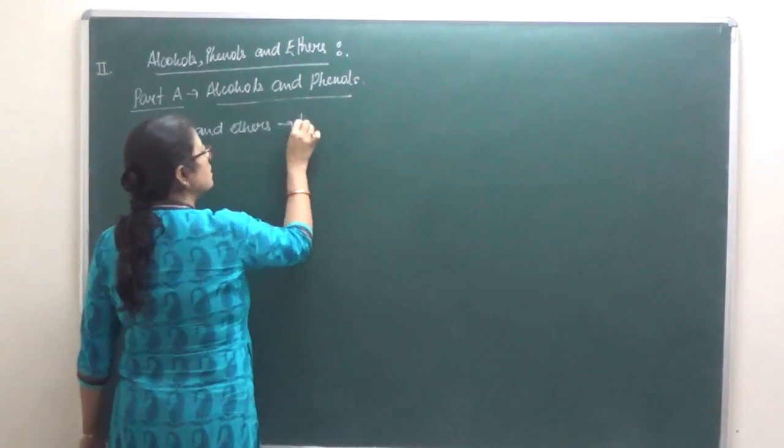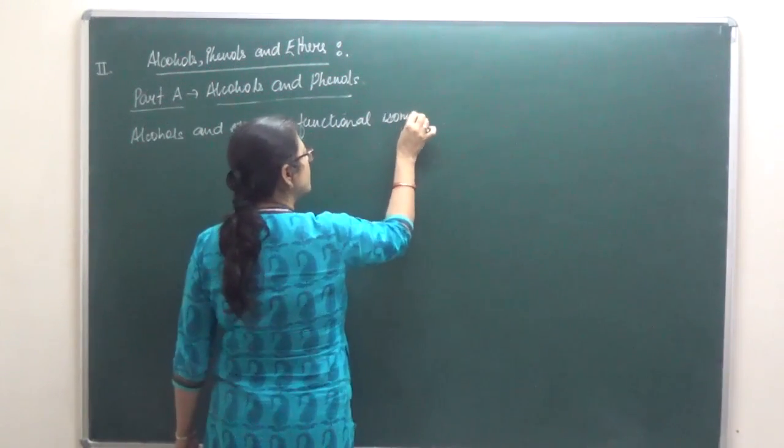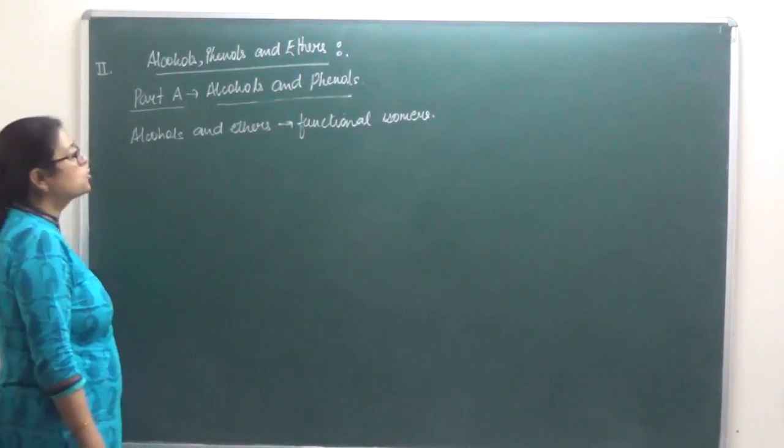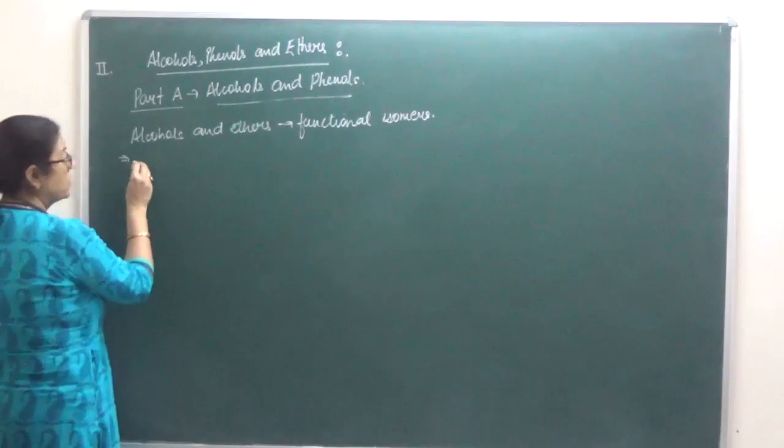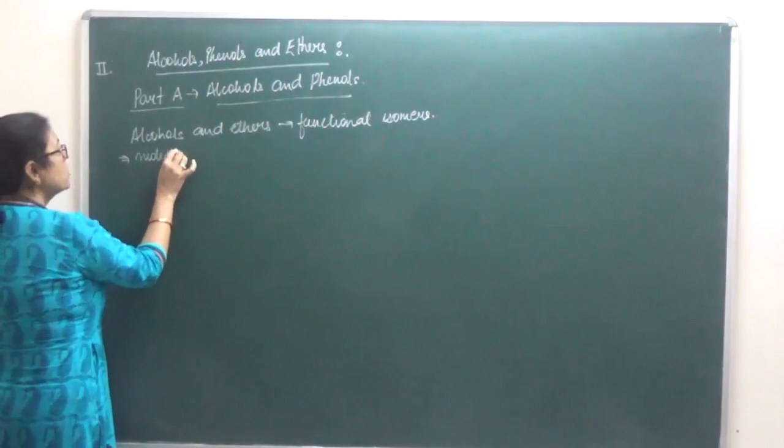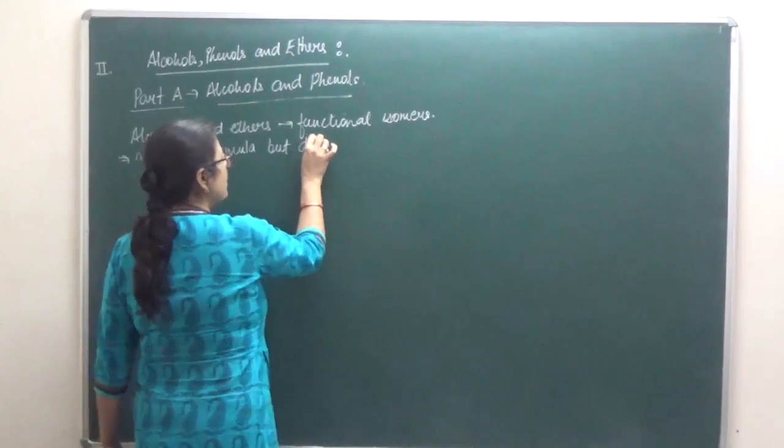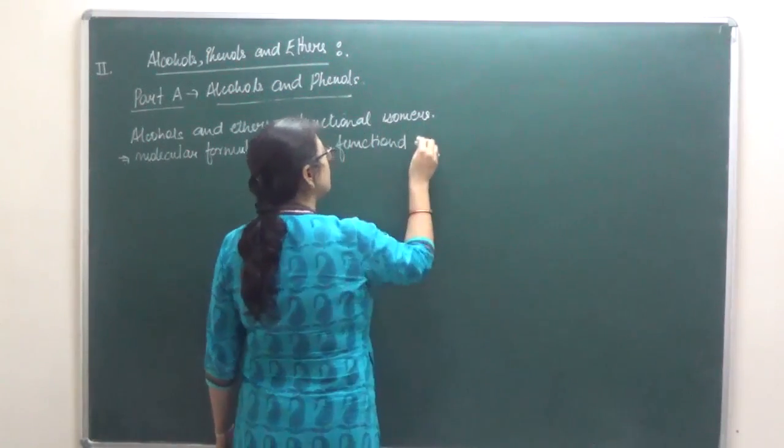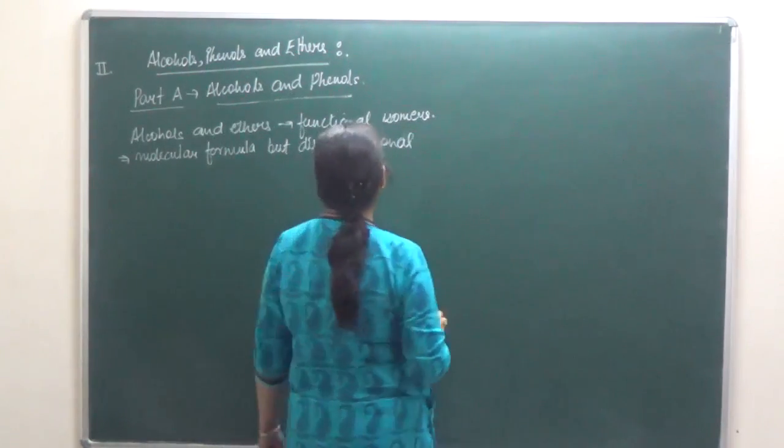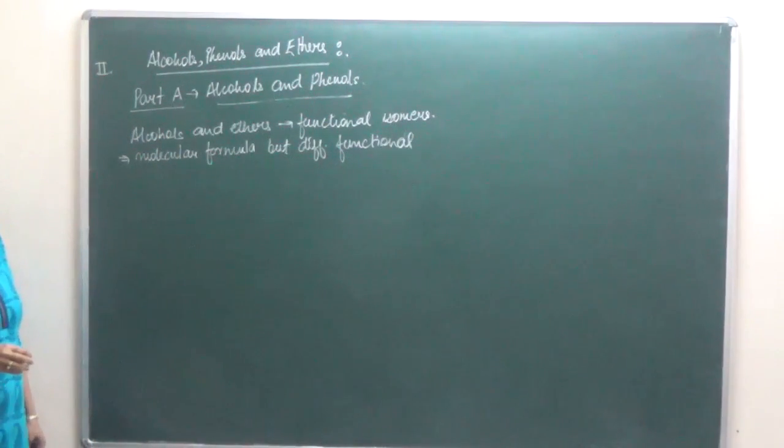Alcohols and ethers are functional isomers of each other. They have the same molecular formula but different functional groups. Same molecular formula but different functional group. Both of them are going to have different properties. That is why we study them also separately.